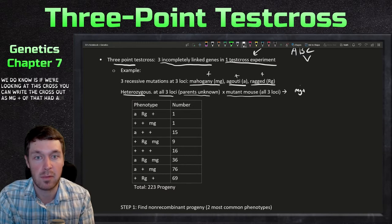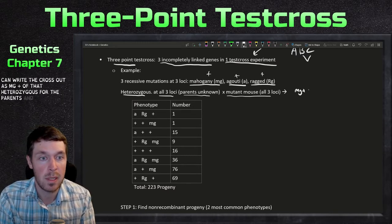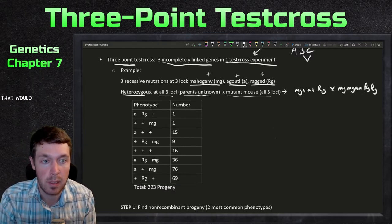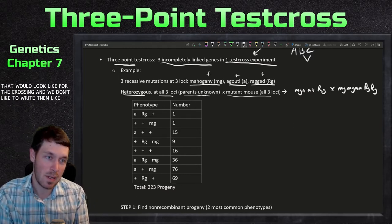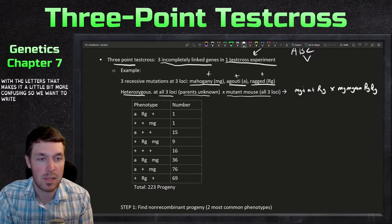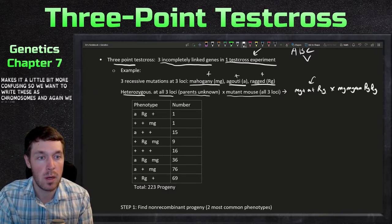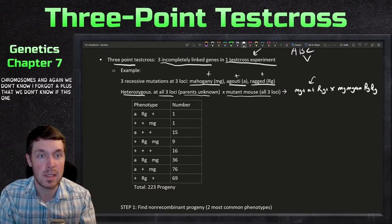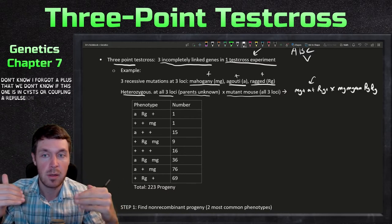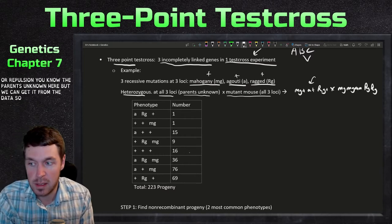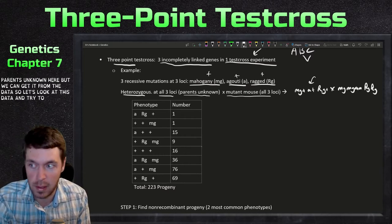We can write this cross out as mg-plus, a-plus, and rg-plus for the heterozygous parent, crossed with all mutants. We don't like to write them with just letters anymore as it gets confusing, so we write these as chromosomes. We don't know if this is in coupling or repulsion since the parents are unknown, but we can get that from the data.